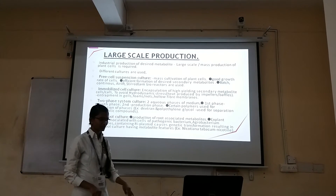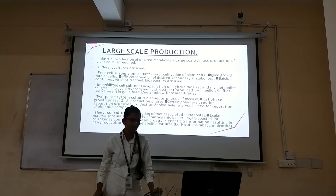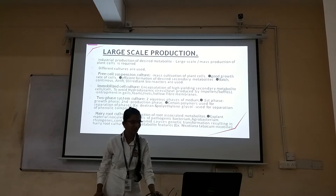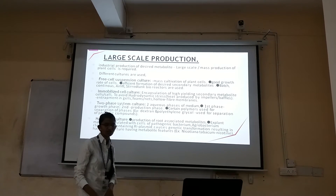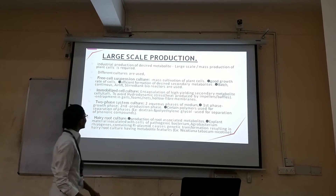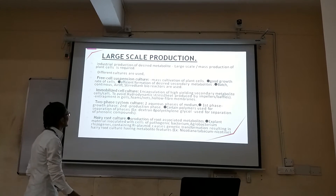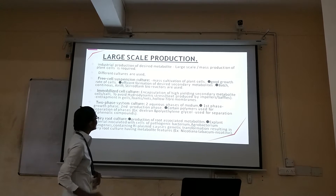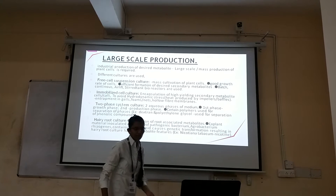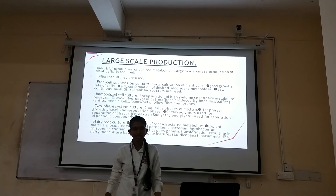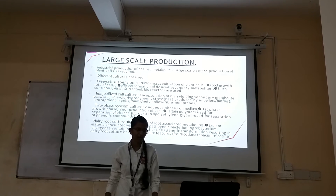Large scale production involves mass production of plant cells using different culture systems: free cell suspension culture, immobilized cell culture, two phase system culture, and hairy root culture. Free cell suspension culture involves mass cultivation of plant cells with a good growth rate and efficient formation of desired secondary metabolites. Bioreactors used include batch bioreactor, continuous, air lift, and stirred tank bioreactors.